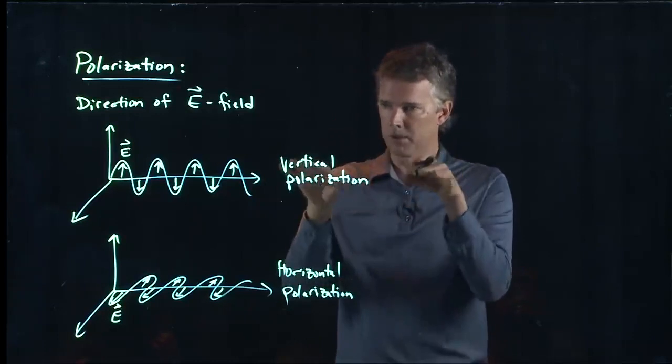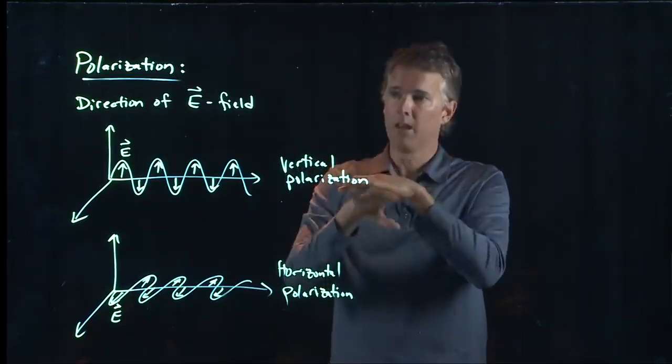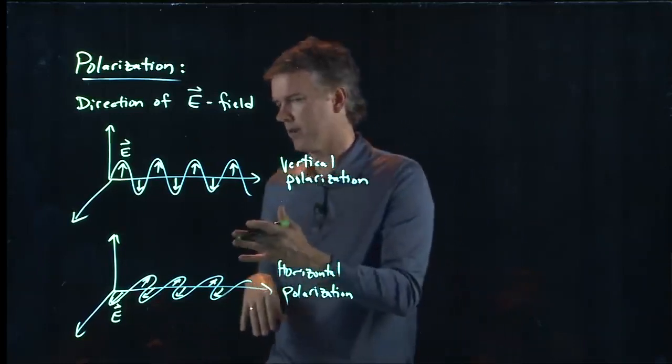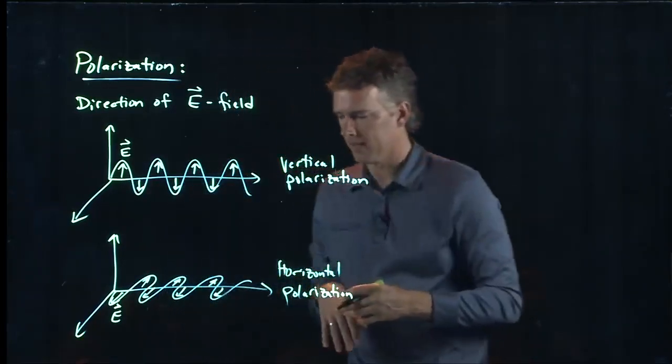So, when you're looking at the ocean, you see a bunch of glare. Put on your polarized sunglasses, the glare goes away. And that's because that glare is polarized in one direction, your polarized sunglasses block it.